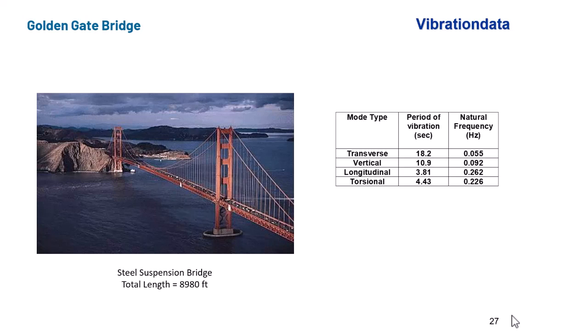Today we're going to talk about a couple of structures that are much more massive and have much lower natural frequencies. So the first is the Golden Gate Bridge. This is a steel suspension bridge. The total length is 8,980 feet. And off to the right, you see the first four structural modes, or natural frequencies, of that bridge.